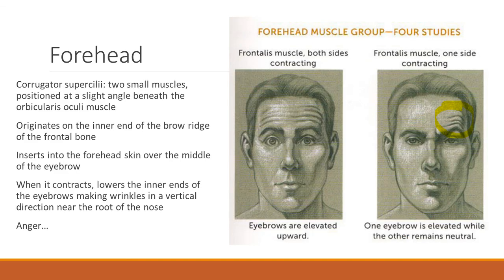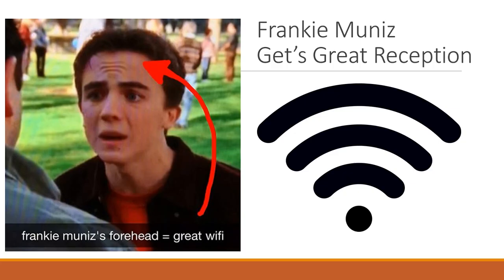Looking back at the forehead being wrinkled — there was an actor, Frankie Muniz, and when he's upset or frustrated, you can see lines forming in the center of his forehead rather than all the way across. It's kind of a meme on the internet where Frankie Muniz gets great reception because he gets that Wi-Fi look.